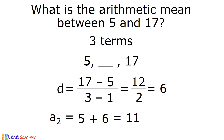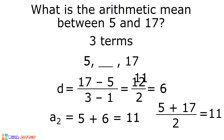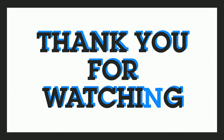Since there is only one missing term between two numbers, there is another way to solve for that missing term, and that is by computing the average of the two numbers. If we add 5 and 17 and divide by 2, the answer is also equal to 11. That's it for this video. Thank you for watching.